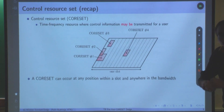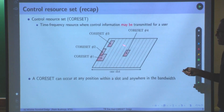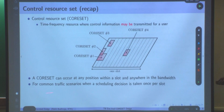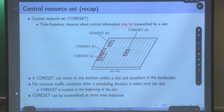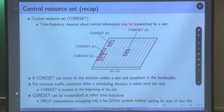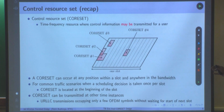For common traffic scenarios where a scheduling decision is taken once per slot, the CORESET is located at the beginning of the slot. However, for URLLC data, the CORESET can come anywhere in the slot. CORESET can be transmitted at other time instances for URLLC transmission occupying only a few OFDM symbols, without waiting for the start of the next slot.